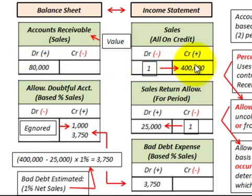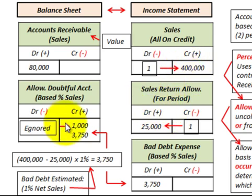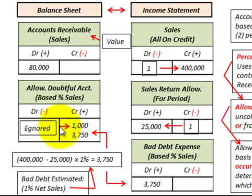We have accounts receivable debited for $80,000, sales of $400,000, and sales returns and allowances for the period of $25,000 — that's a contra account that reduces our sales. We're also given an allowance for doubtful accounts with $1,000 currently sitting in it. When using the percentage of sales calculation, this $1,000 is going to be ignored.